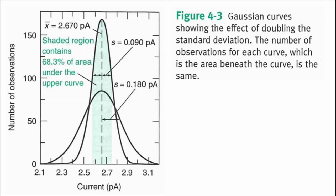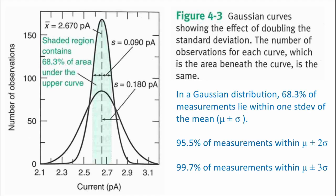A couple of things of note about the Gaussian distribution: the standard deviation of your measurements affects how wide the distribution is. If you double the standard deviation, you get a broader curve — the width of the curve depends on the standard deviation. One standard deviation away from the mean on both sides encompasses 68.3% of all possible measurements. If you take out to two standard deviations, that's 95% of measurements, and oftentimes we call that good enough. If you go out to three standard deviations, you encompass 99.7% of all measurements.